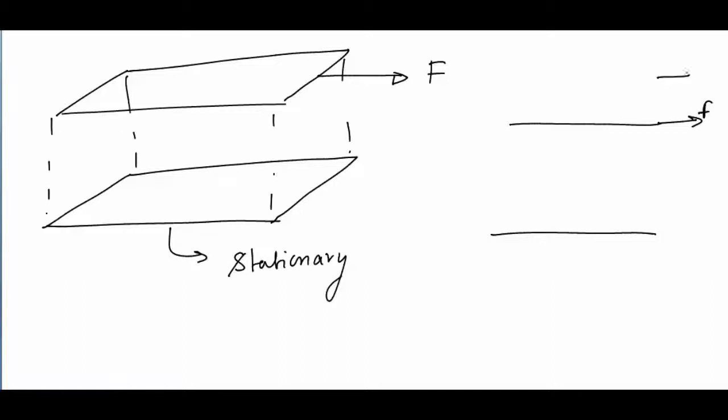So I have a force F. Because of force F, there will be certain velocity V of the top plate. This is my top plate obviously, and this is the stationary bottom plate. Now this is stationary, so velocity of the fluid which is near to this surface will be 0.